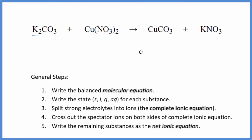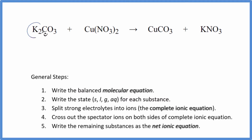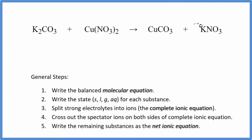First, we need to balance the molecular equation. It looks like I have two potassiums here and just one here. I also have two nitrates here and just one here. So I can put a 2 in front of the potassium nitrate. The potassium and the nitrates are balanced, copper and copper, and then a carbonate and a carbonate — they're balanced too. So that's the balanced molecular equation.